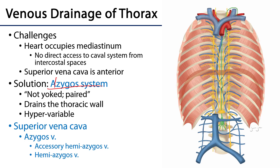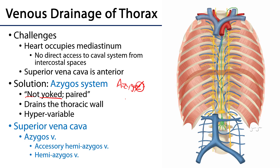Azygous comes from the root words 'a' meaning not and 'zygous' meaning yoked — as in two oxen being yoked together. So in essence this is an unpaired system, and it is not written with a 'u', so there is no 'u' in azygous.